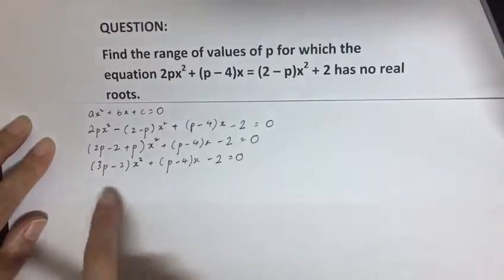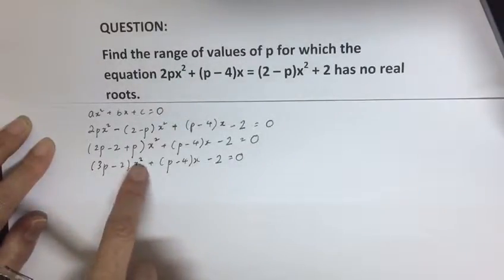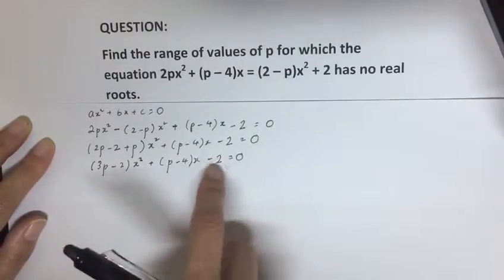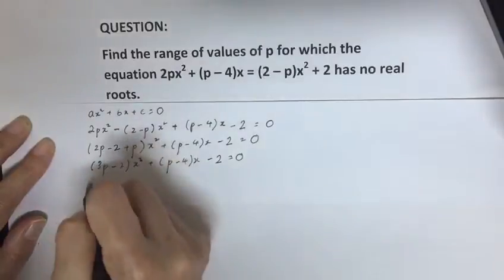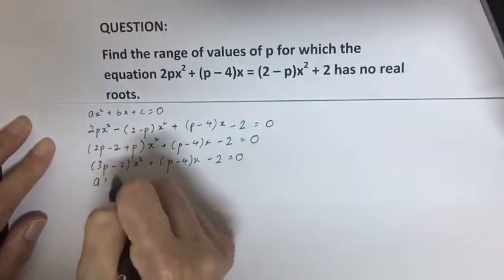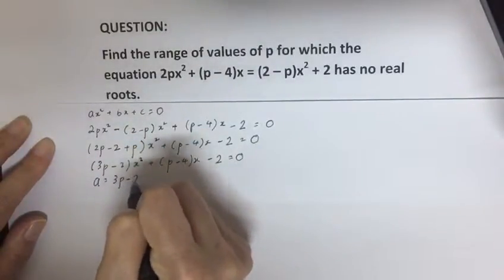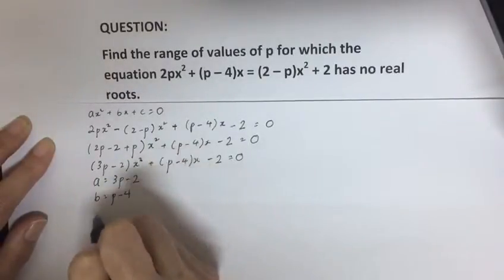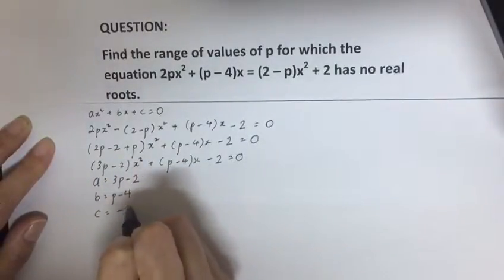So now you look at it, your number attached to x² is this, so this is A. This part here is B and your C is -2. C is the constant term.